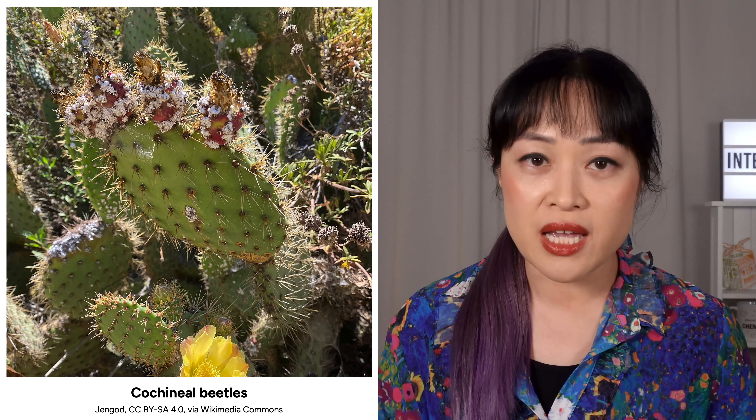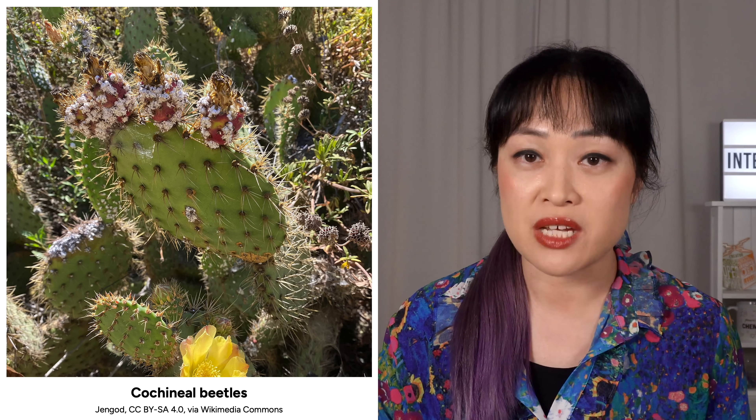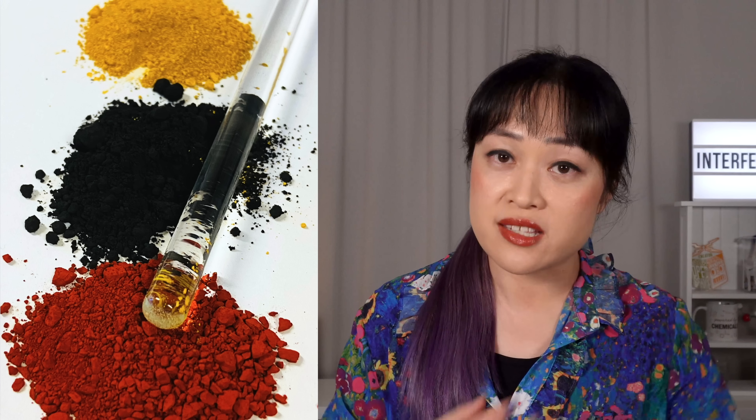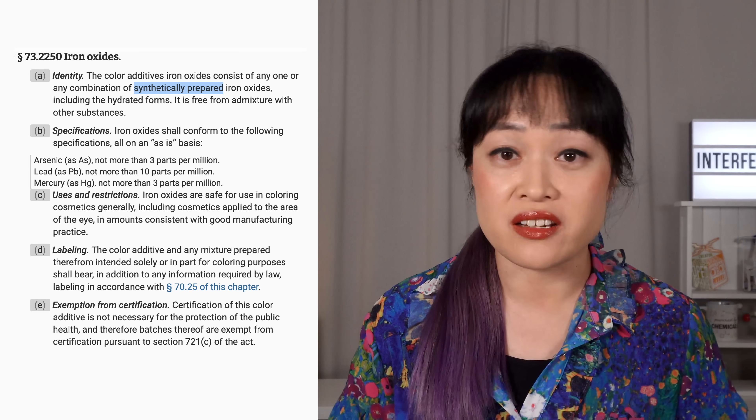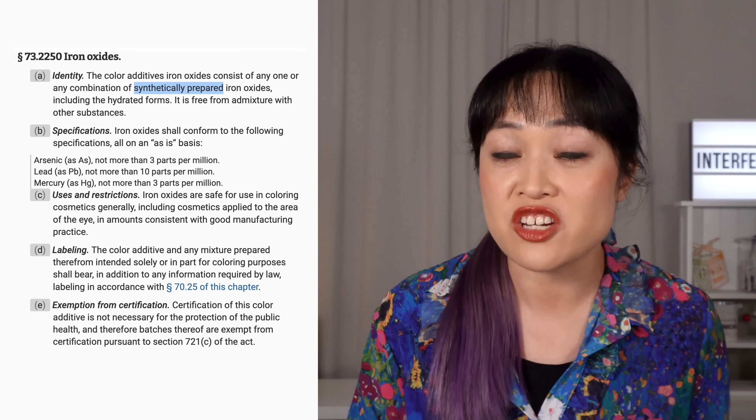Most organic pigments used in products are synthetic, meaning their structures don't exist in nature. One big exception is carmine, a natural organic red pigment made from beetles. Inorganic pigments are used in mineral makeup because they're considered more natural — they are found in nature, but most of the time in makeup, inorganic pigments are also made synthetically. That's because the natural mined material is often contaminated with toxic heavy metals, and the quality is usually more consistent if made in a lab. Iron oxides are inorganic and used to get skin tones in almost all foundations — there's red, yellow, and black. Natural iron oxides are actually banned in cosmetics in the US because of this heavy metal contamination problem.